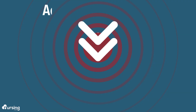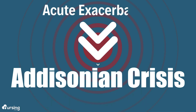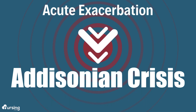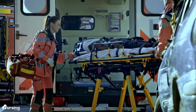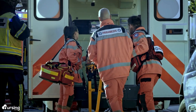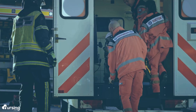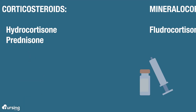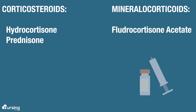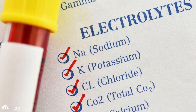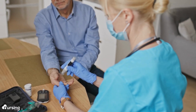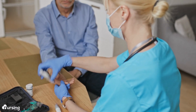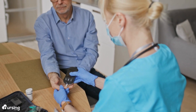In fact, an acute exacerbation may actually result in what's called Addisonian crisis, where symptoms appear suddenly and severely and can lead to life-threatening shock. For these patients, you may be administering corticosteroids like hydrocortisone or prednisone, and fludrocortisone acetate for mineralocorticoid replacement. Monitoring vital signs, electrolyte labs, and blood glucose are also part of therapeutic management, due to the hormones that are missing that control those processes in the body.